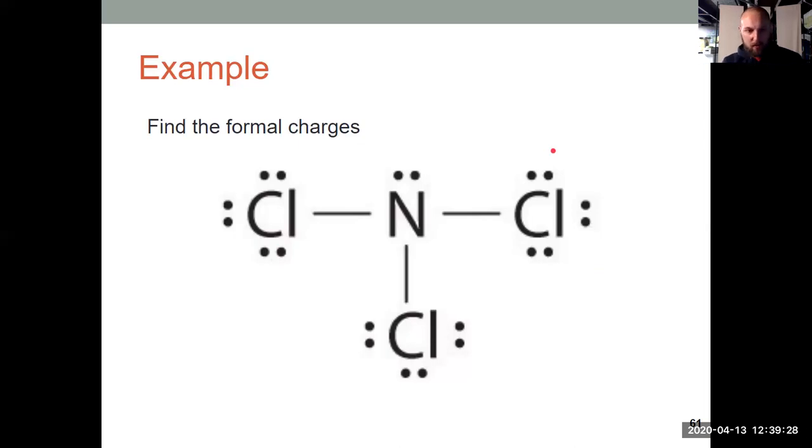Nitrogen in group 15. It has five valence electrons minus two lone pair electrons minus three bonds, five minus two minus three. Nitrogen also has a formal charge of zero. So because everything in this molecule has a formal charge of zero.